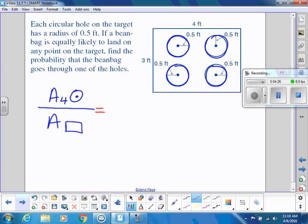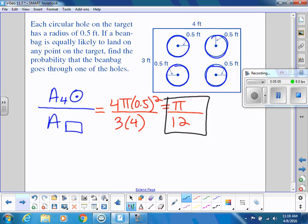This is very similar to that area worksheet we've already done in class. Area of a circle is π r squared. All the circles have the same radius, so that's π times 0.5 squared, and I'm going to have four of them. That gives me 0.25 times π times 4, which is just π. The area of my rectangle is 3 times 4, which is 12. So if I wanted to keep it as an exact answer, I could say π over 12. If I wanted a decimal answer, that's approximately 0.26, which means it's a 26% chance of getting a bean bag through one of those holes.